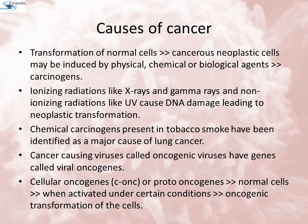Transformation of normal cells into cancerous neoplastic cells may be induced by physical, chemical, or biological agents. These agents are called carcinogens. Ionizing radiations like X-rays and gamma rays, and non-ionizing radiations like UV, cause DNA damage leading to neoplastic transformations. The chemical carcinogens present in tobacco smoke have been identified as a major cause of lung cancer. Cancer-causing viruses called oncogenic viruses have genes called viral oncogenes. Furthermore, several genes called cellular oncogenes or proto-oncogenes have been identified in normal cells, which when activated under certain conditions could lead to oncogenic transformations of the cell.